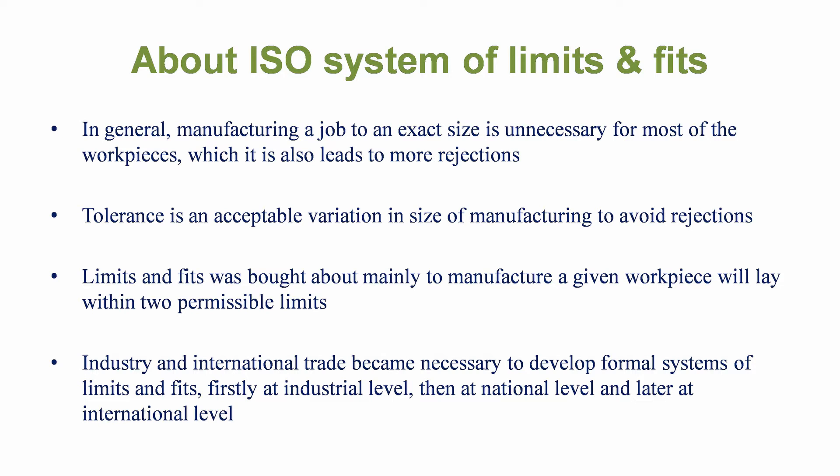In general, manufacturing a job to an exact size is unnecessary for most workpieces, as it also leads to more rejections. Tolerance is an acceptable variation in size of manufacturing to avoid rejections. Limits and fits was introduced mainly to ensure a given workpiece will lay within two permissible limits. Industry and international trade made it necessary to develop a formal system of limits and fits — first at the industrial level, then at the national level, and later at the international level.